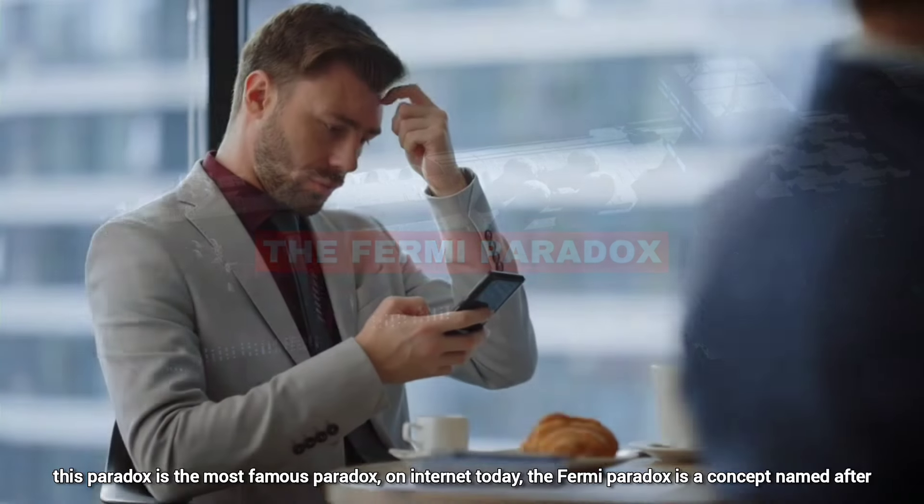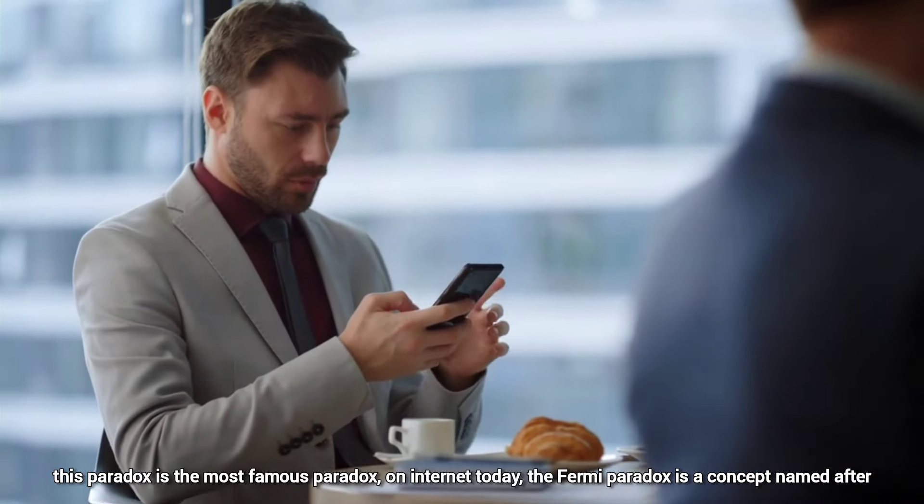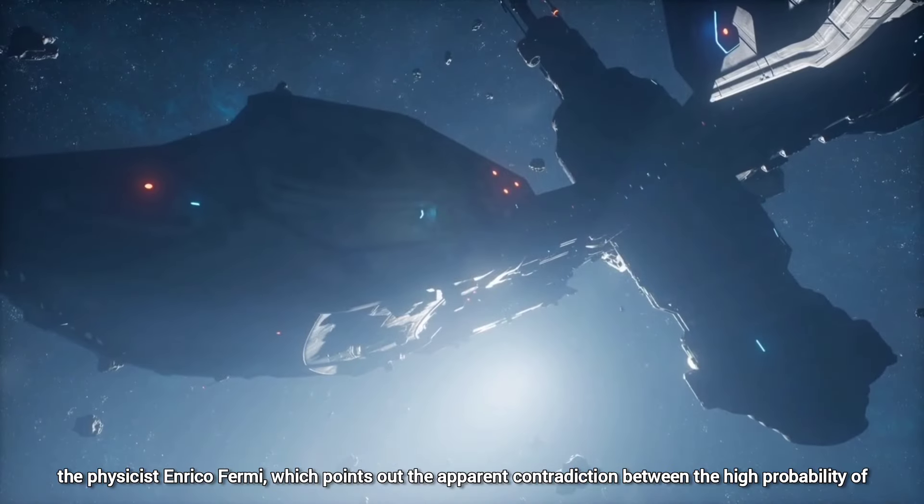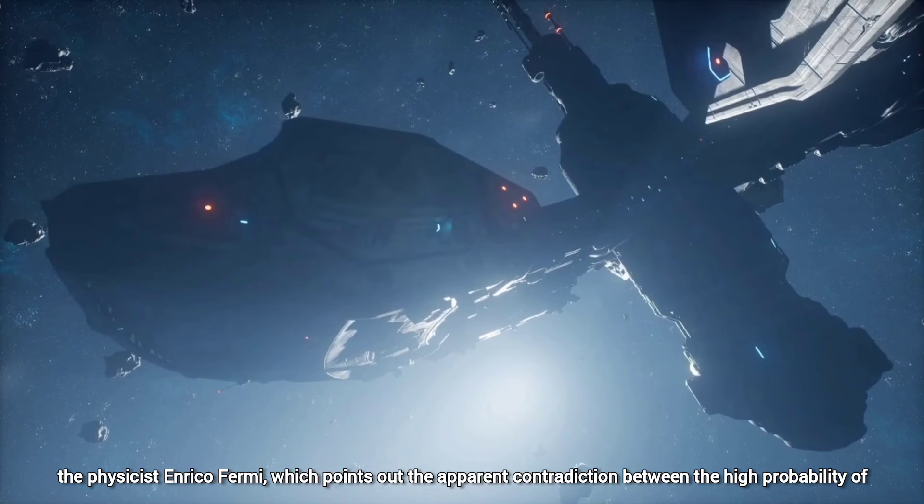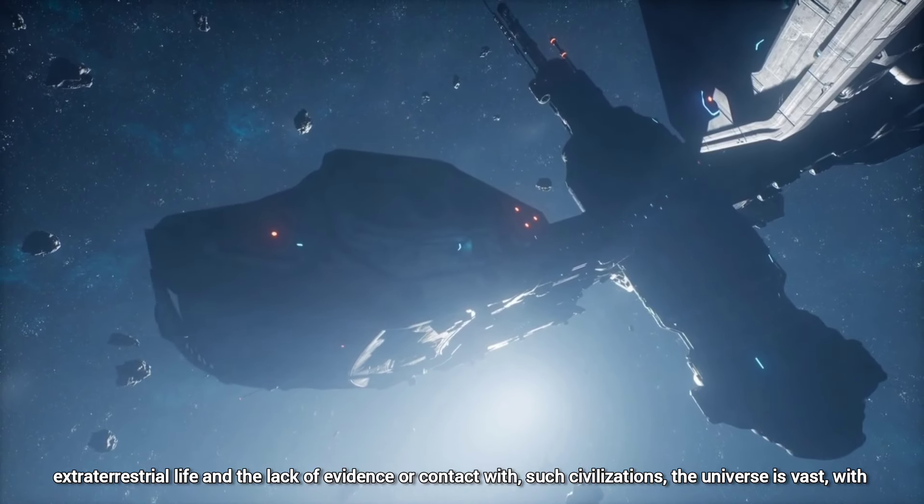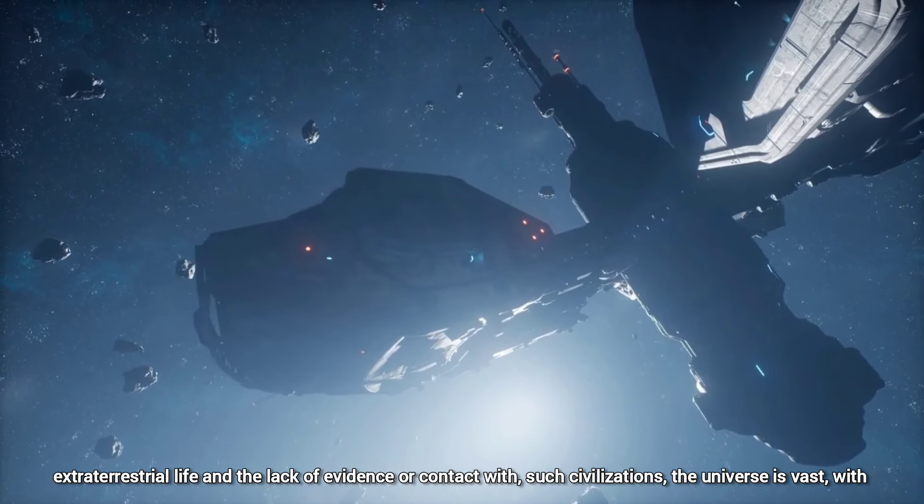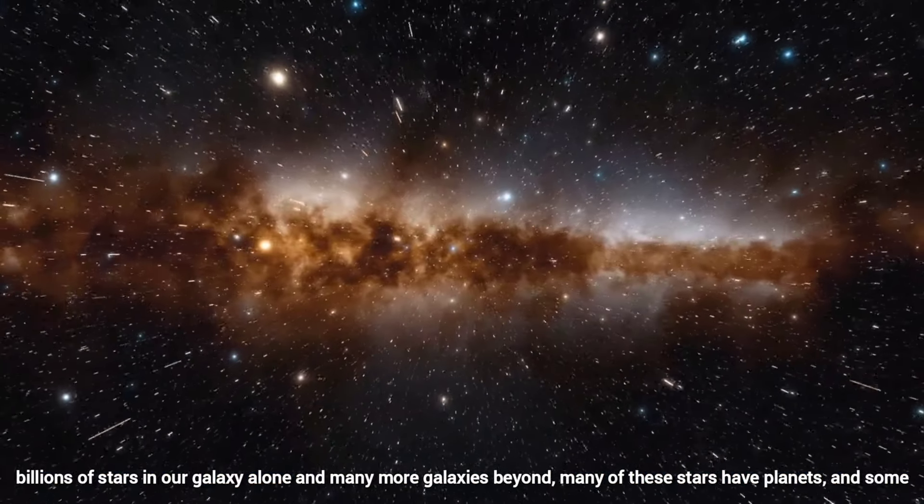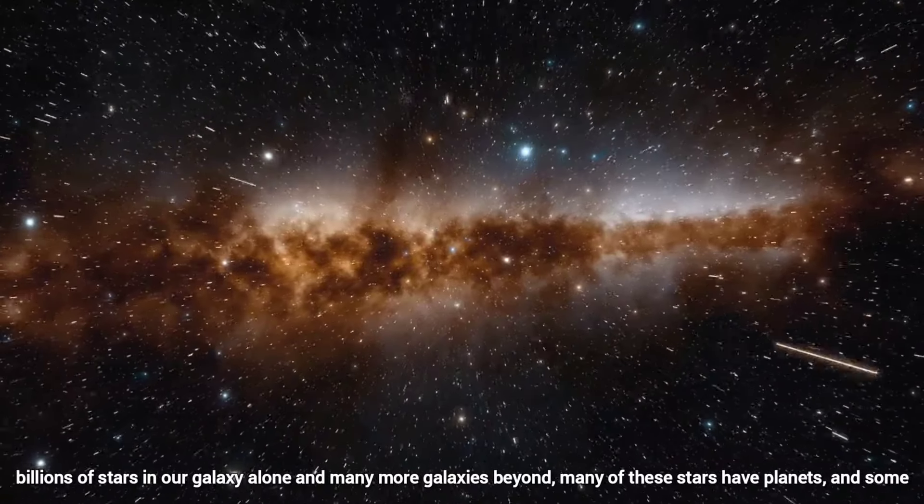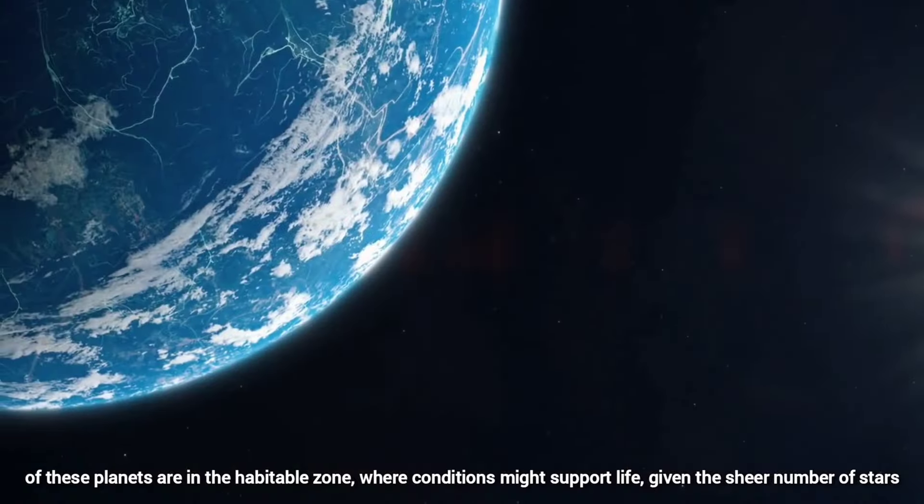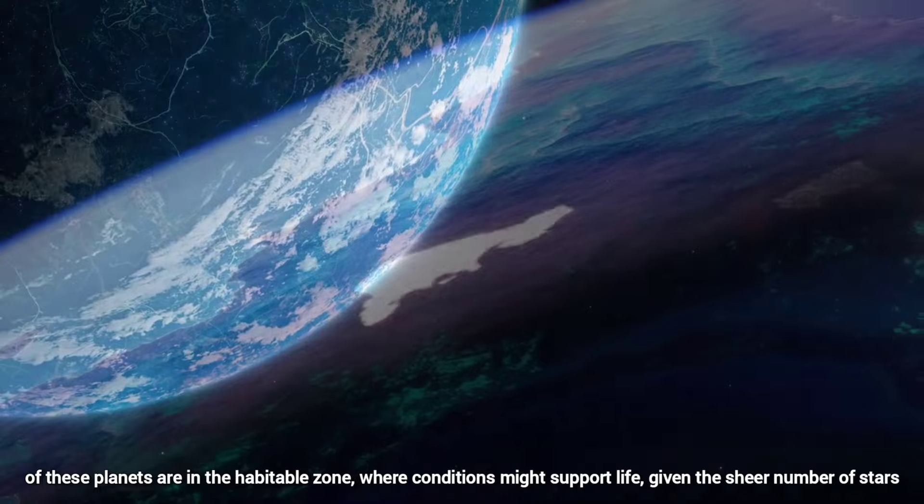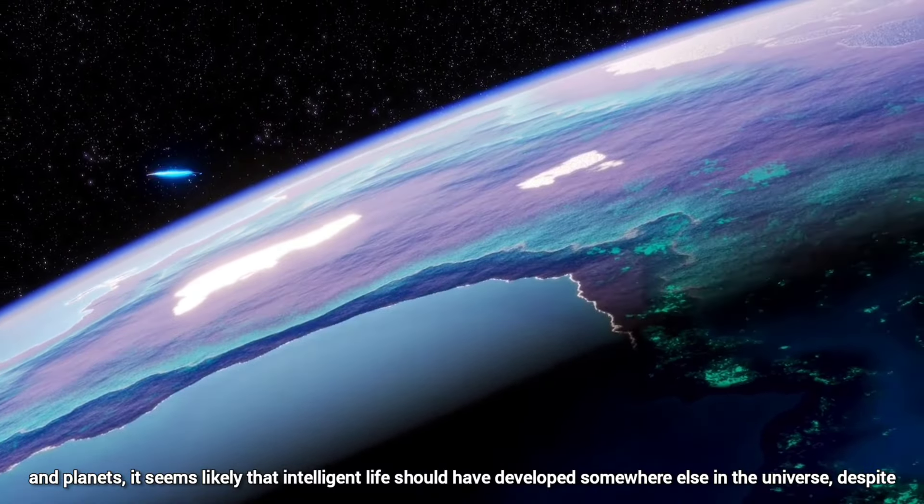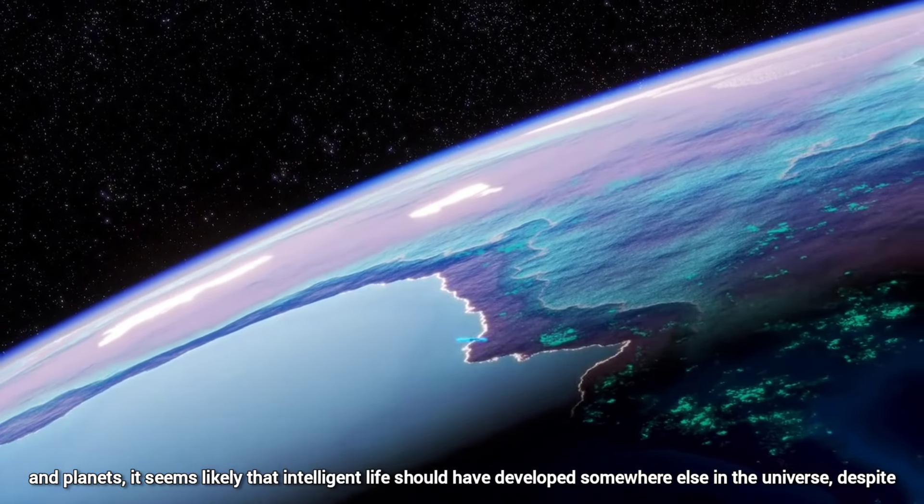The Fermi Paradox. This paradox is the most famous paradox on the internet today. The Fermi Paradox is a concept named after the physicist Enrico Fermi, which points out the apparent contradiction between the high probability of extraterrestrial life and the lack of evidence or contact with such civilizations. The universe is vast with billions of stars in our galaxy alone and many more galaxies beyond. Many of these stars have planets, and some of these planets are in the habitable zone where conditions might support life. Given the sheer numbers of stars and planets, it seems likely that intelligent life should have developed somewhere else in the universe.